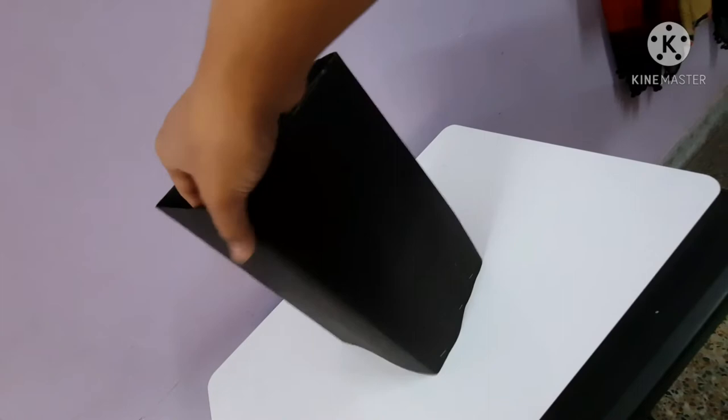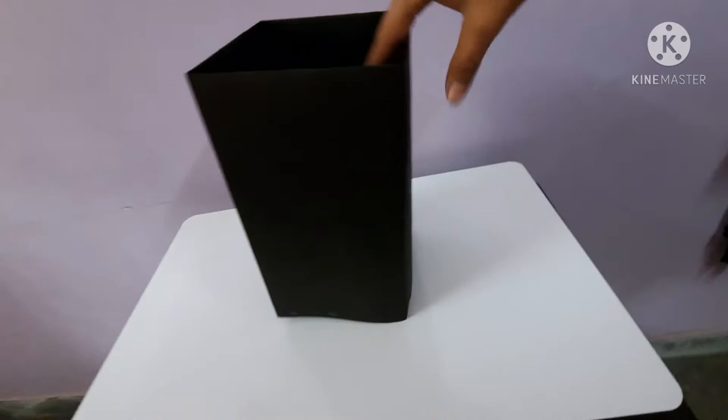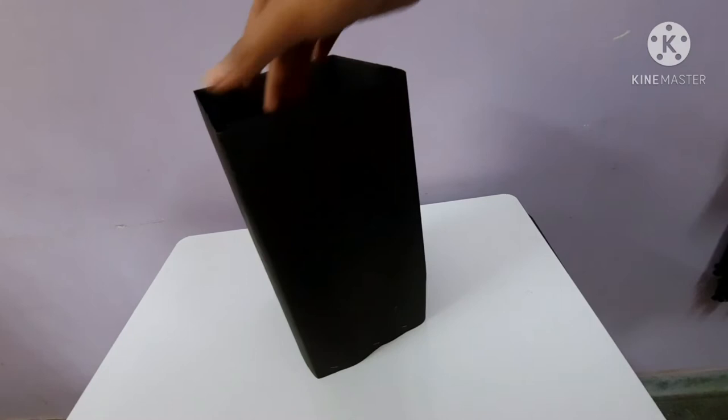As you can see, the rectangular box is ready. We have made this box by using a black chart paper, the rectangular box like this. Now I am going to show you how you can stick the traffic lights.